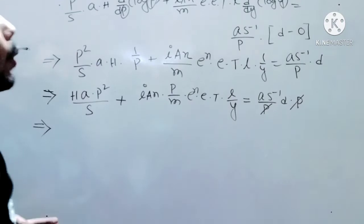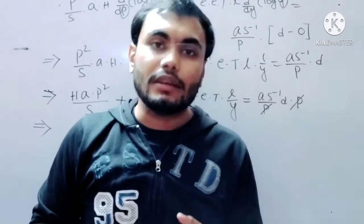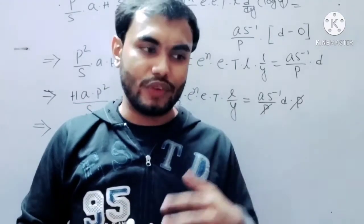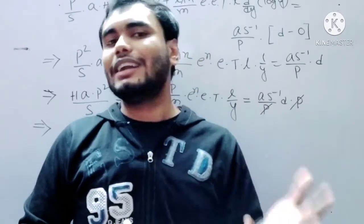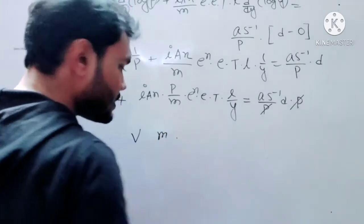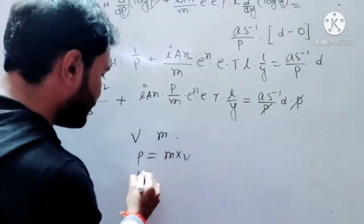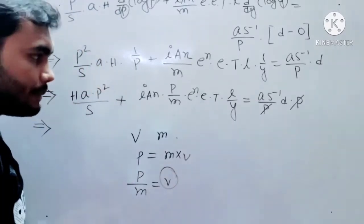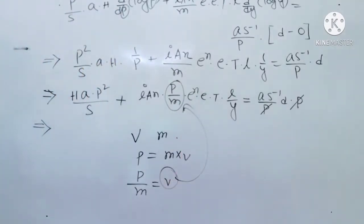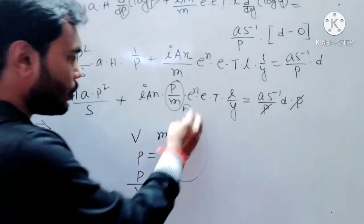Now, from physics, momentum is denoted by small p, and momentum equals mass times velocity: p = m times v. From this, p divided by m gives v, the velocity. So in place of p over m I will substitute v. This is the bit of physics I mentioned I'd use.